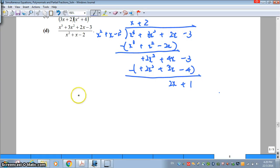Rewrite everything. You have your quotient plus the remainder over your original divisor.